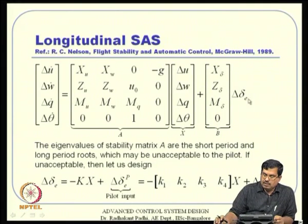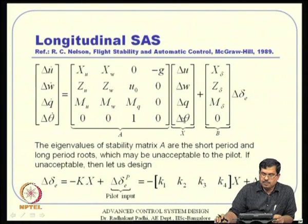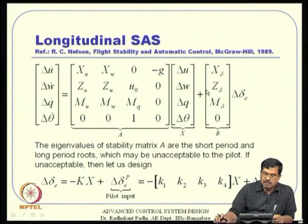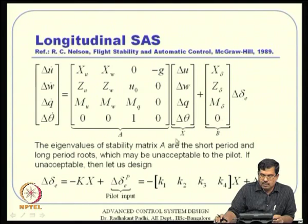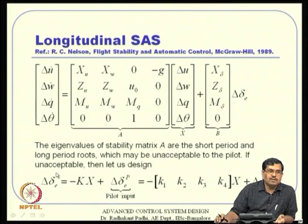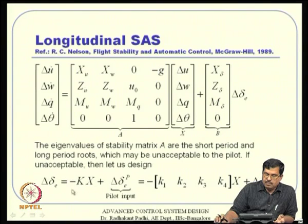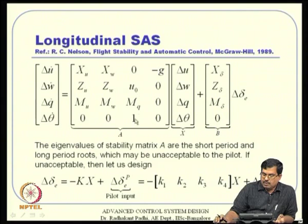In the linearized model, we use delta notation for deviation variables. The elevator input delta_E is split into an automatic feedback component -KX and a pilot input delta_E_P. This is a four-dimensional system with a single control input, making pole placement very applicable. The gain matrix K = [K1, K2, K3, K4] needs to be determined; the pilot input is left free.